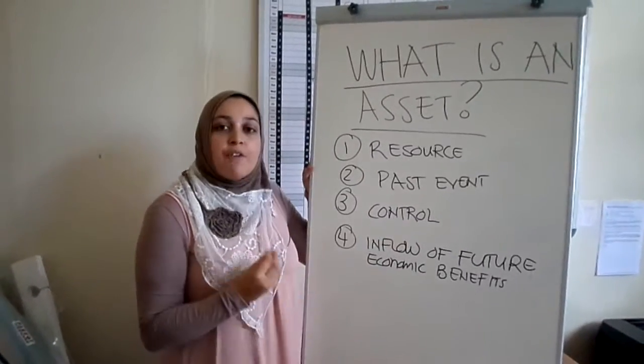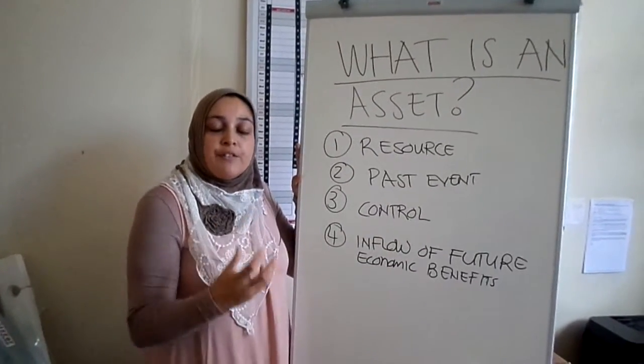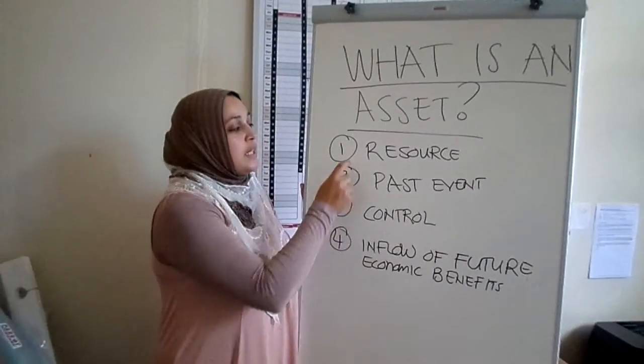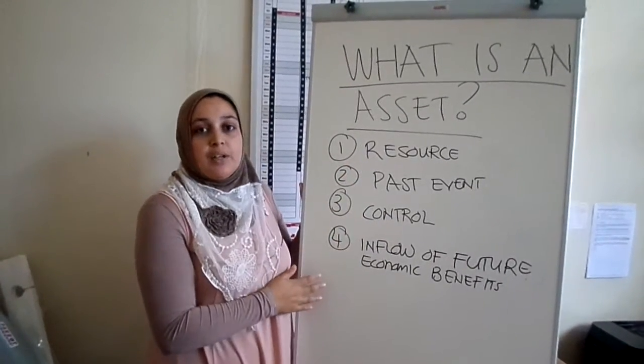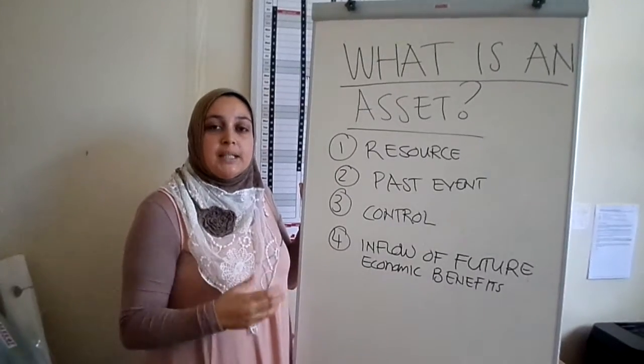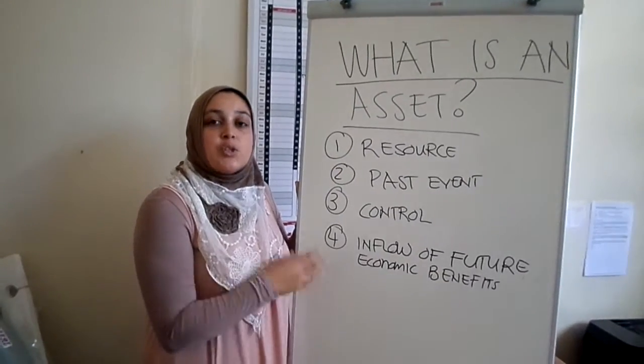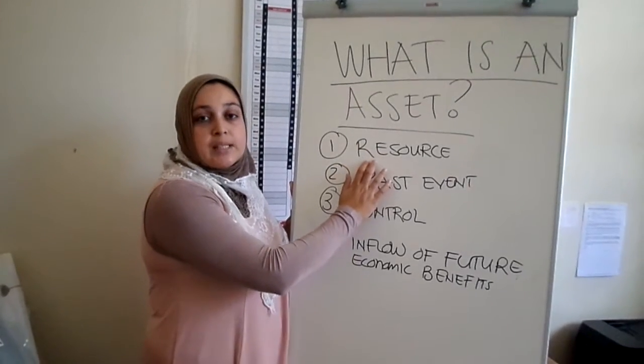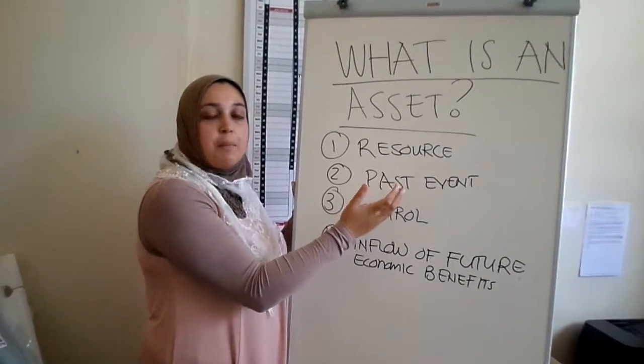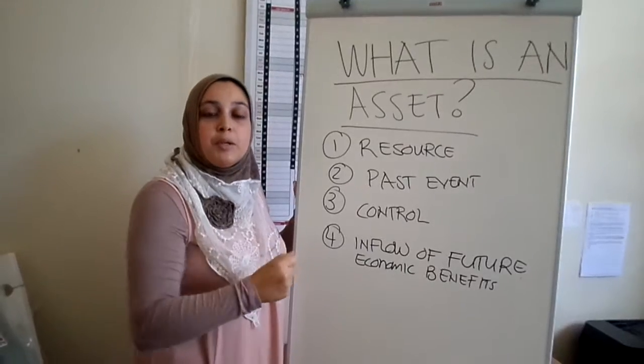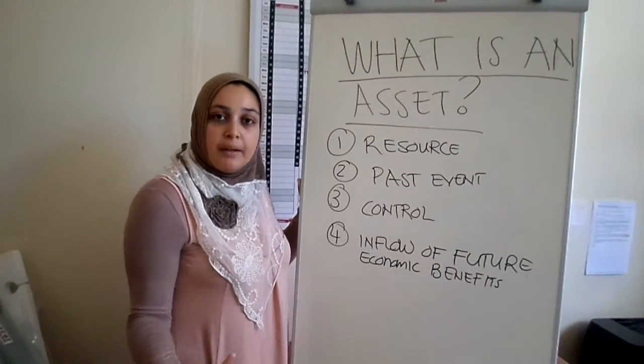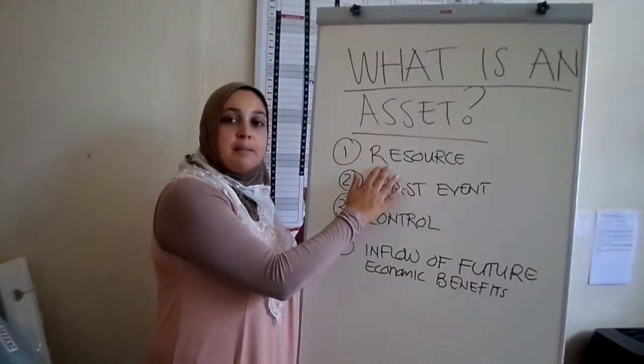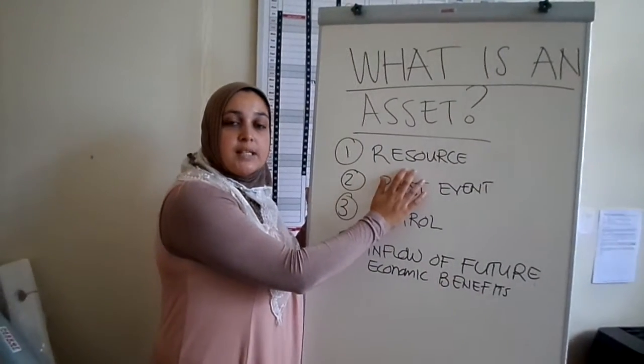So what you need to do is, if I've asked you, if I've given you a transaction that says you've purchased equipment, you need to ask yourself, does that meet the definition? So it's purchasing equipment, meeting the definition of an asset. So you have to go through the example by saying, is there a resource? What is the resource if you purchase equipment? The resource is the actual equipment, because you are using it to produce something. So a resource is something that you can make use of. So the equipment meets a part of the definition which says it's a resource.